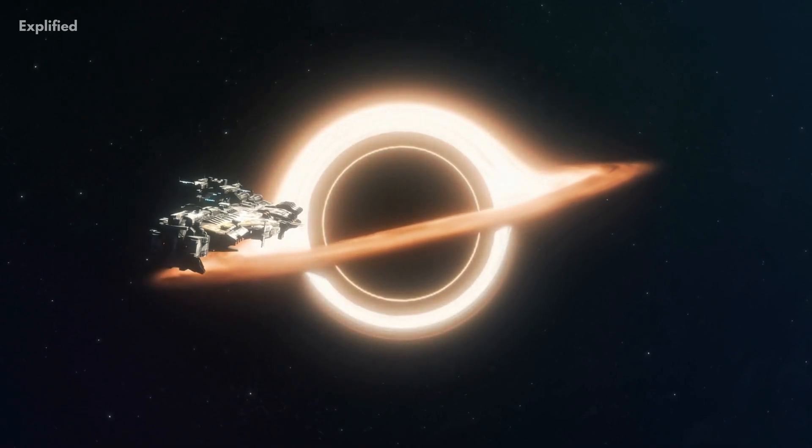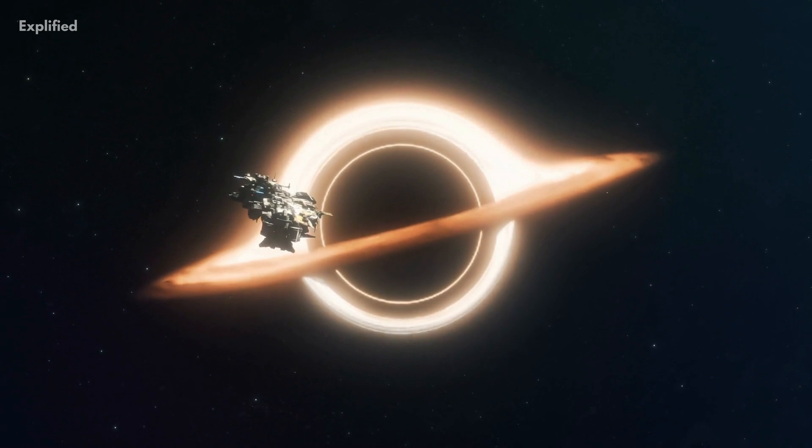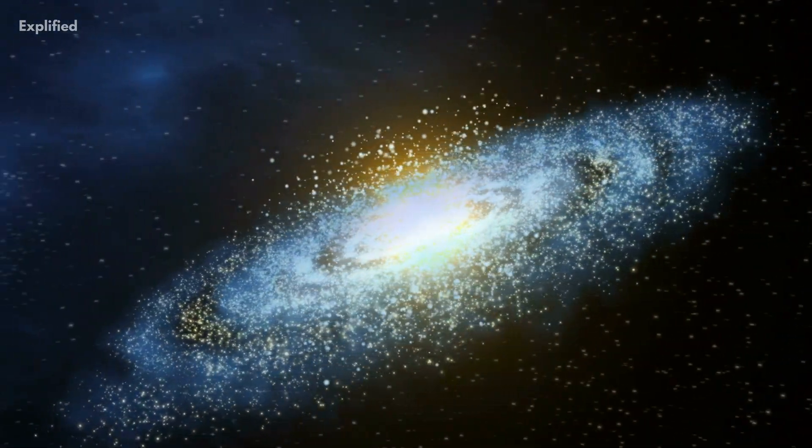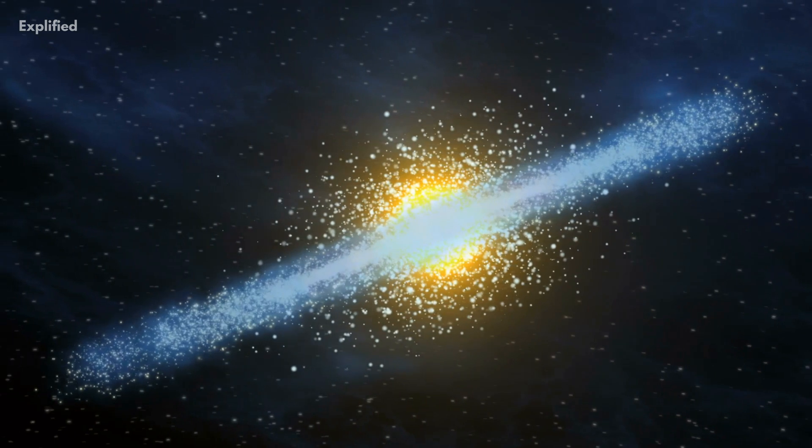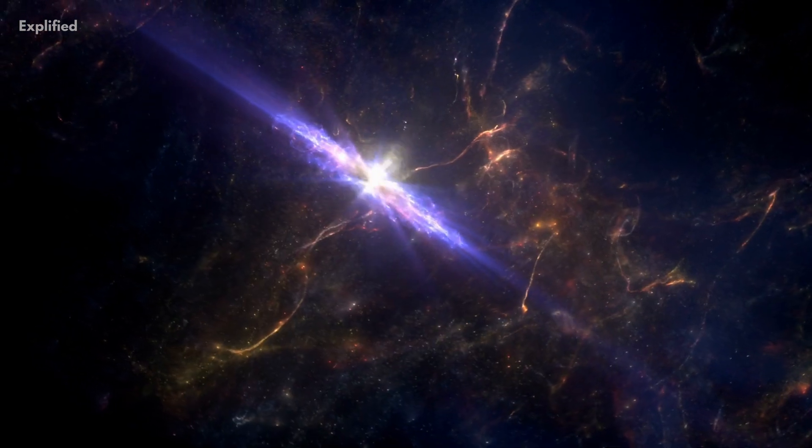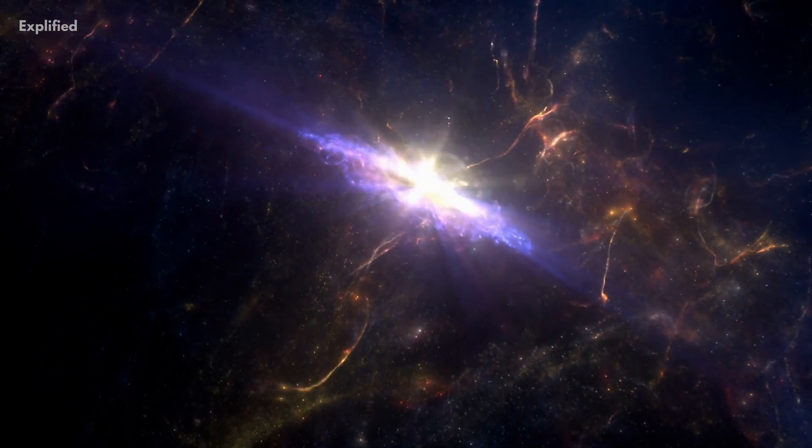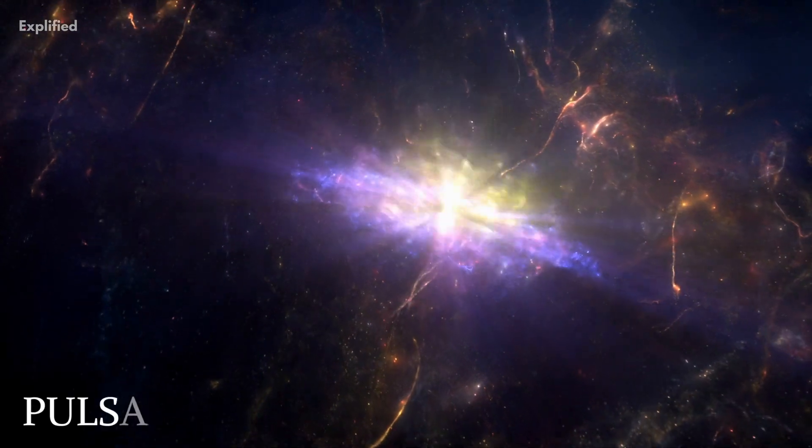Its gravity is so strong that even light cannot escape it. However, neutron stars are still one of the densest objects present in our universe. They sometimes release electromagnetic radiation, in which case they are known as pulsars.